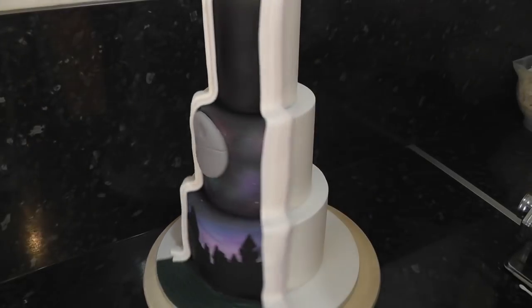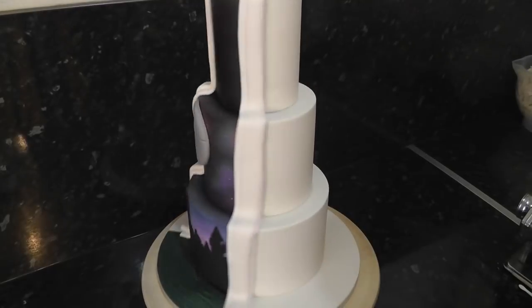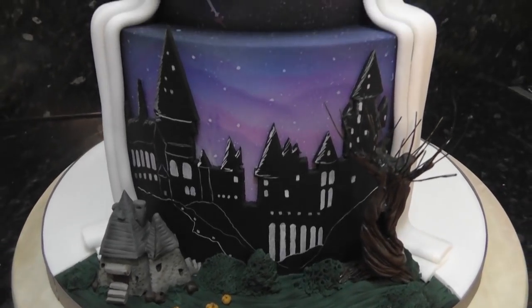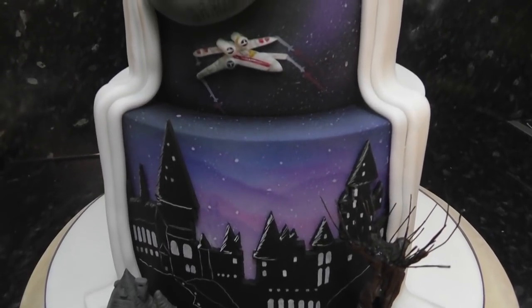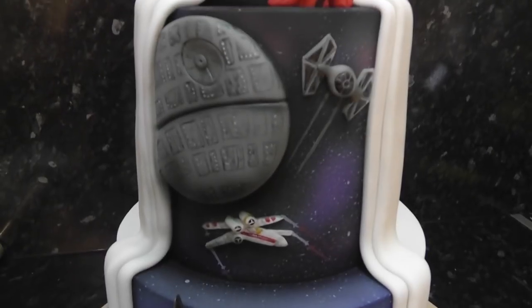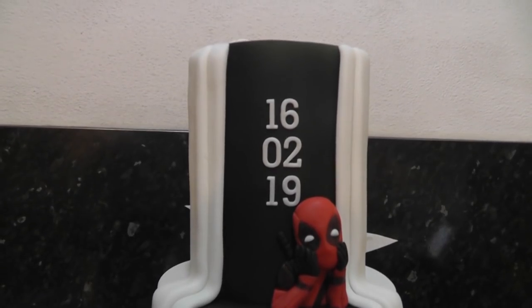Now we've got a clean white cake to decorate down the front and a striking contrast of color down the back. Add on all your extra details. This was Hagrid's hut and the Whomping Willow for the bottom. The Death Star and some fighters on the middle. And Deadpool and the wedding date on the top. The front also had some geek elements but a bit more subtle in white and silver.